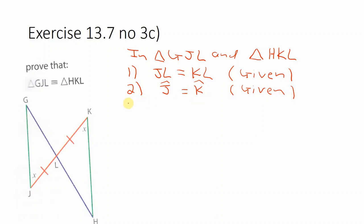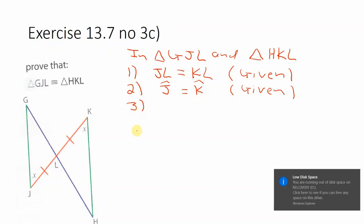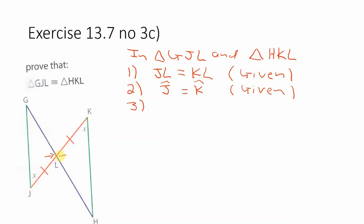So we need a third step. And I can see we have vertical opposite angles here. They are staring at each other across lines that crossed. So angle GLJ.